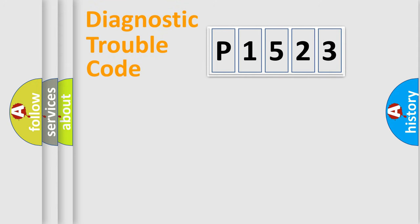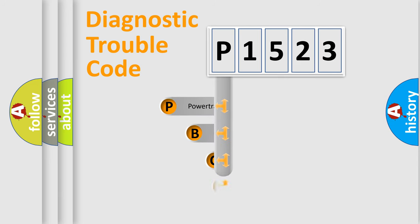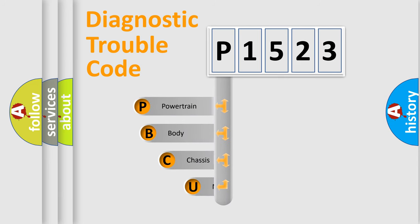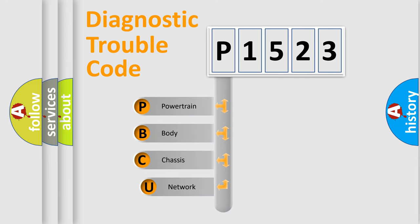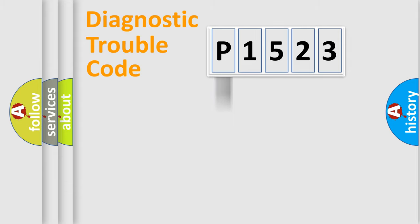Let's do this. First, let's look at the history of diagnostic fault code composition according to the OBD2 protocol, which is unified for all automakers since 2000. We divide the electric system of the automobile into four basic units: Powertrain, Body, Chassis, and Network.